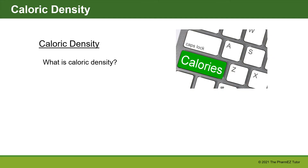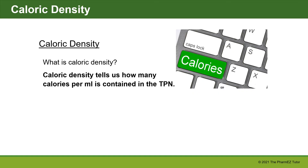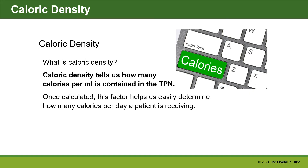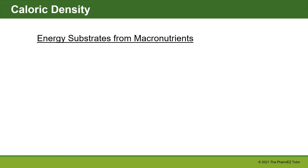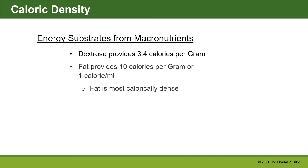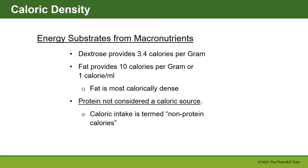Caloric density tells us how many calories per mL are contained in the TPN. Once we calculate this, it helps us easily determine how many calories per day a patient is receiving. Dextrose provides 3.4 calories per gram. Fat provides 10 calories per gram, or 1 calorie per mL — fat is the most calorically dense. Protein is not considered a caloric source. Caloric intake is termed non-protein calories.